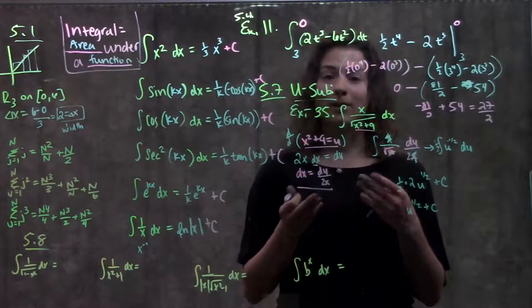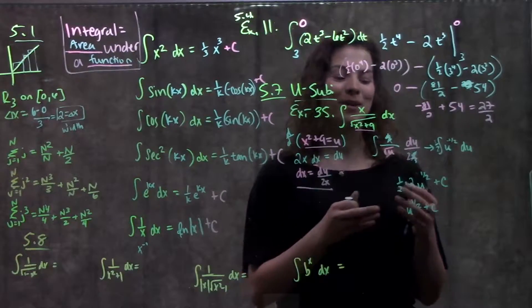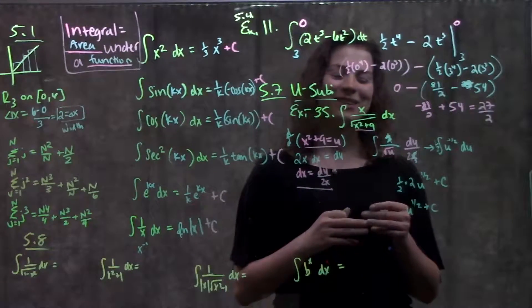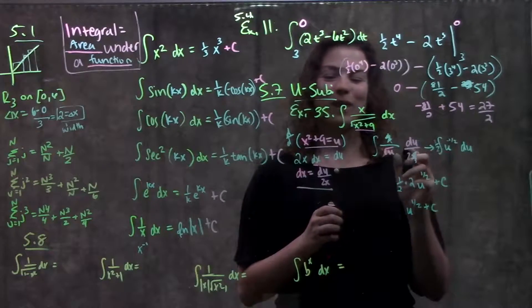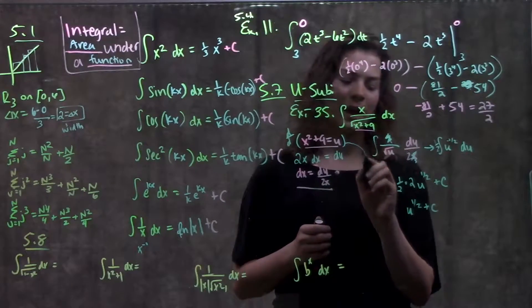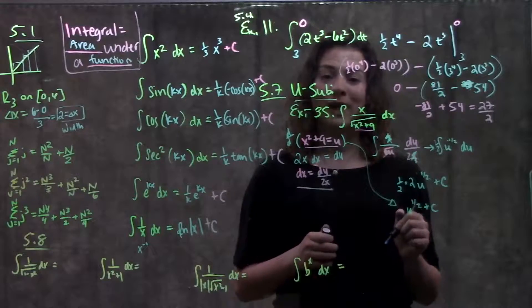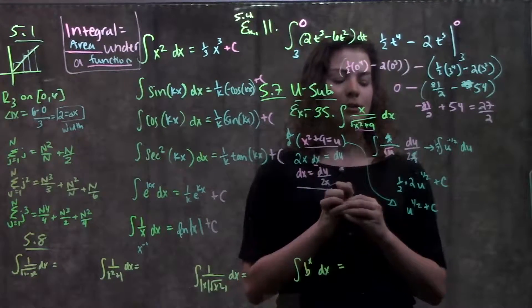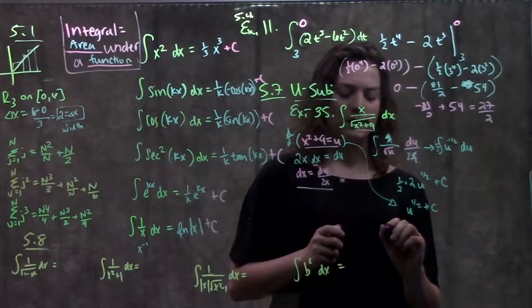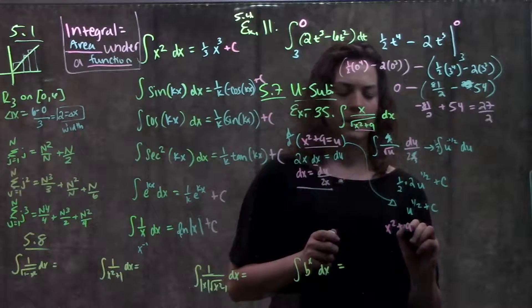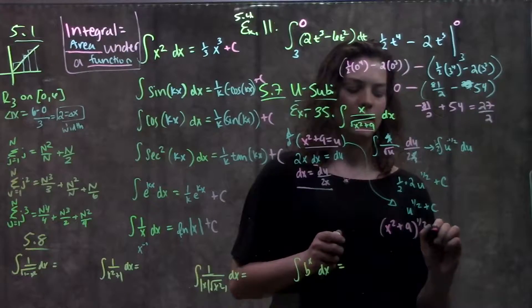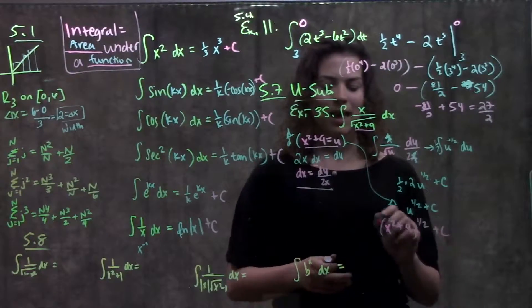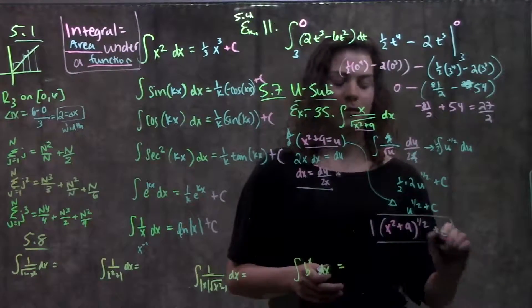Now we care about u as a person, however, we don't want our answer in terms of u. So, what we do here, is we take whatever we set u equal to, and we plug it back in, so that our answer has the same variables that we started with. Now this becomes, plugging in what I set equal to u, x squared plus 9 to the 1 half plus c. And that would be my final answer for this problem.